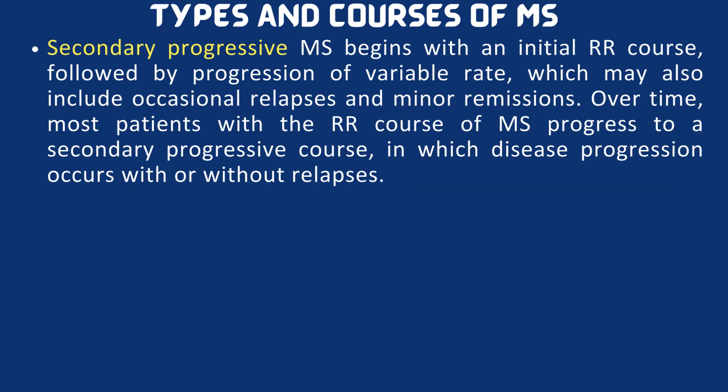Secondary progressive multiple sclerosis begins with an initial relapsing-remitting course followed by progression at a variable rate, which may also include occasional relapses and minor remissions. Over time, most patients with the relapsing-remitting course of multiple sclerosis progress to a secondary progressive course in which disease progression occurs with or without relapses.